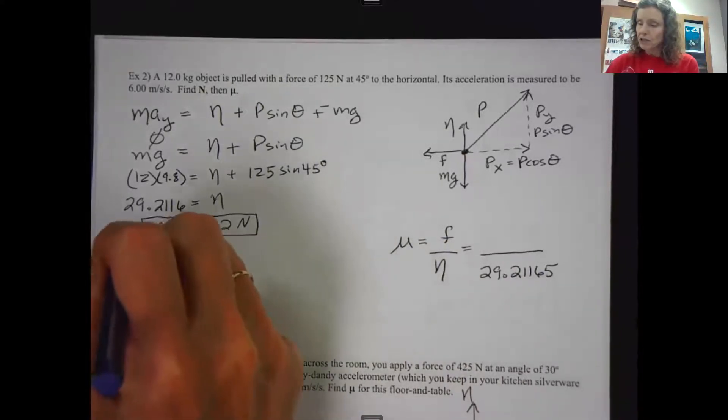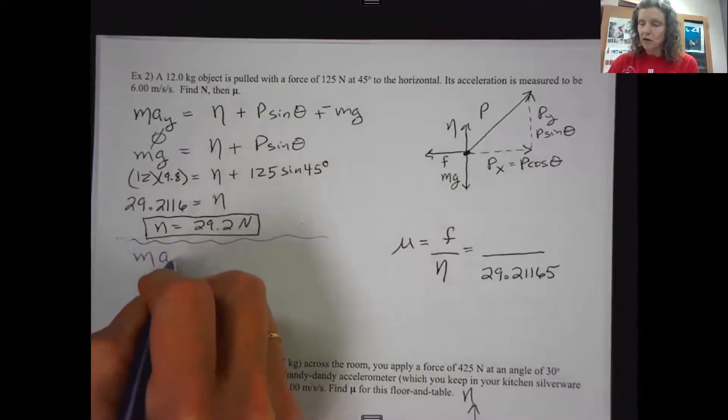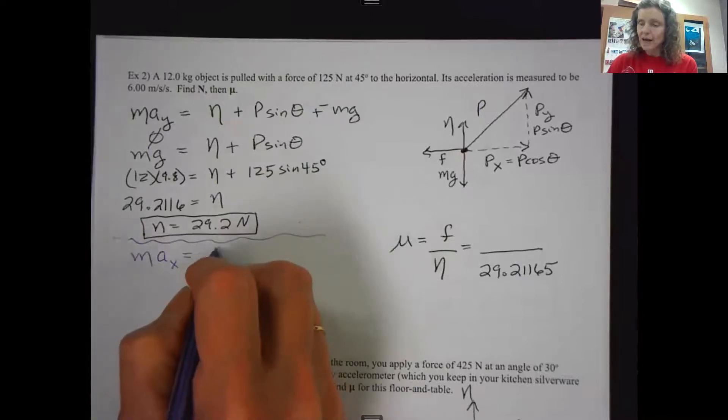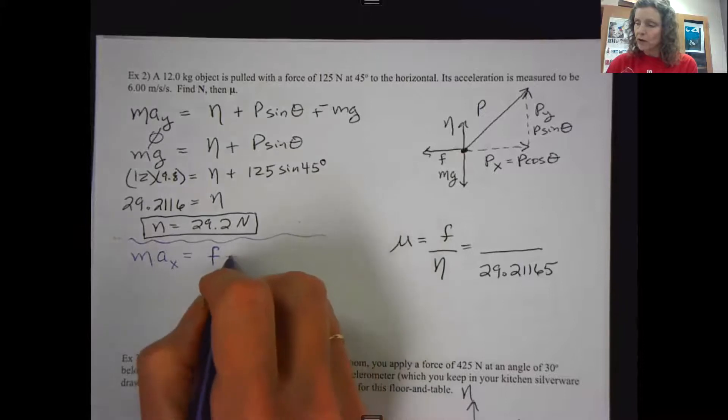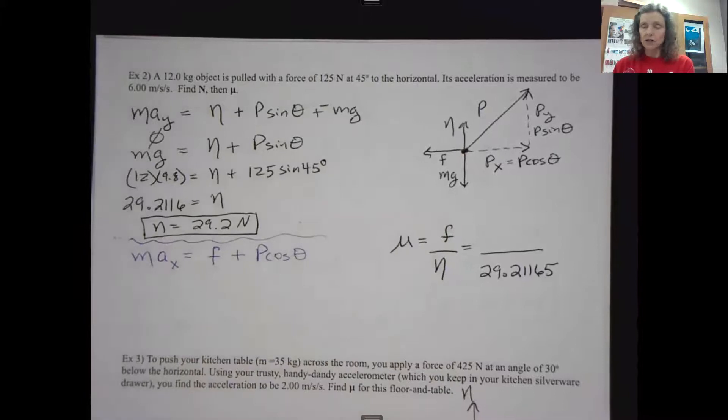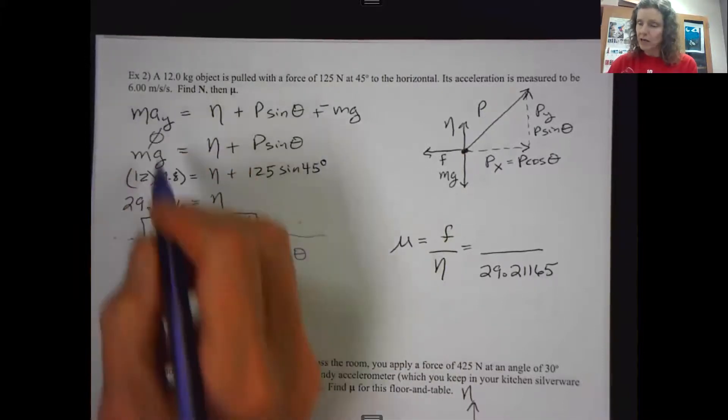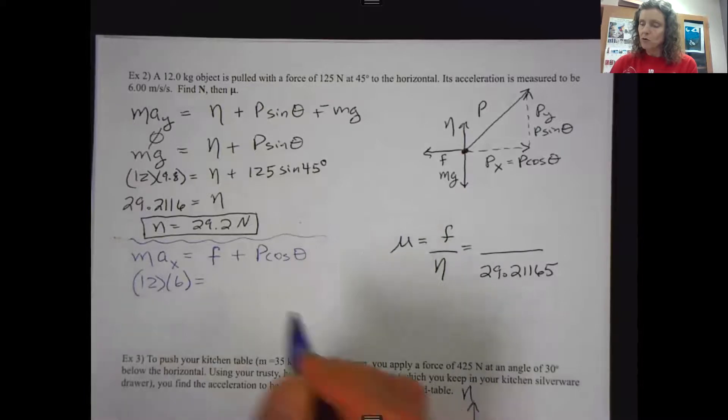So the force of friction is in the x direction. So I'm going to do sigma f in the x direction or ma in the x direction. And I have friction, which is my unknown. So I think I'll leave its sign off and just let it be a true unknown. And then I have p cosine theta, the pull in the x direction. So right here, I am now going to use that six meters per second. So this is my 12 kilogram object. There's my six meters per second. So that's the net force.